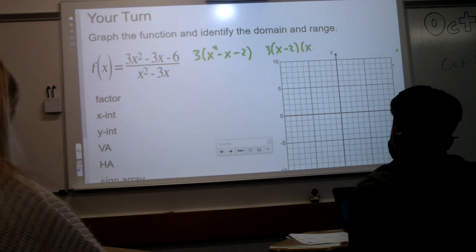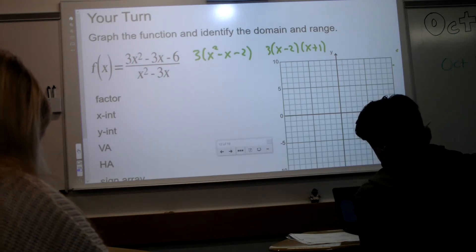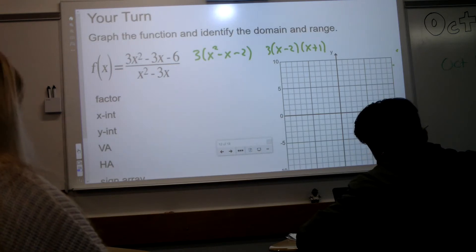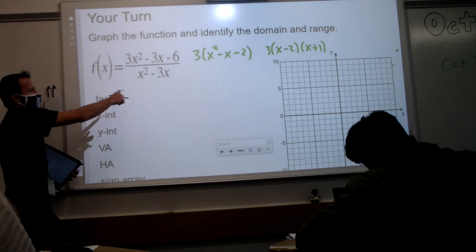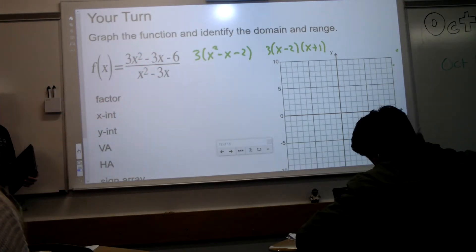Do you guys agree? Awesome. Good job, factor. Now, what does that help you find? So you get the vertical asymptotes from the denominator. The numerator is actually your x-intercept.